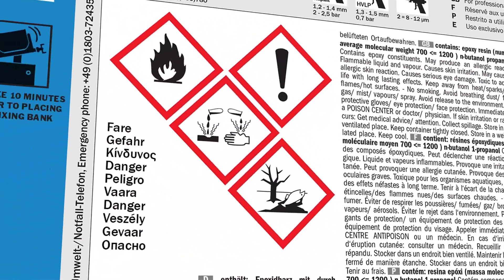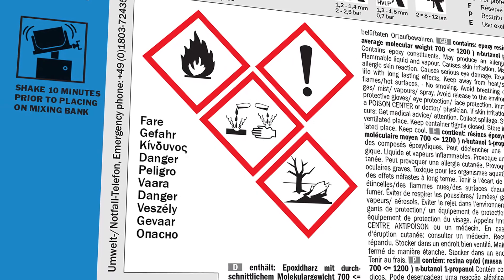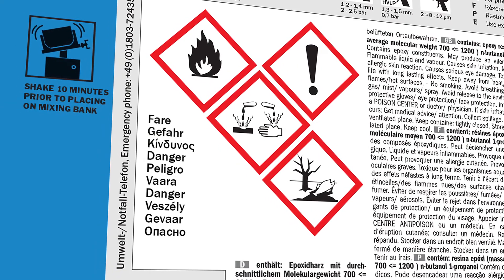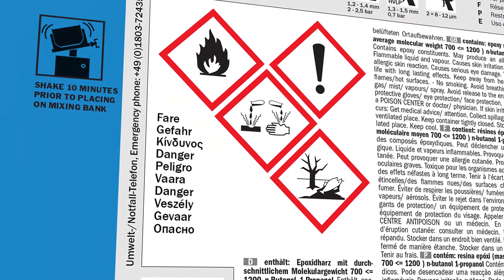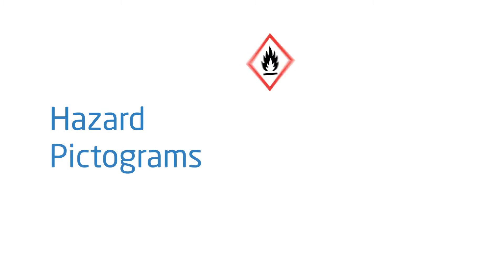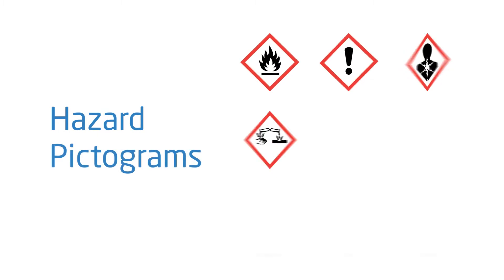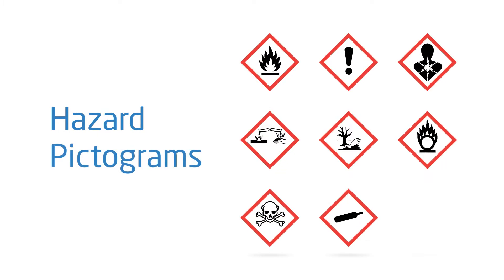Pictograms are incorporated into the CLP label to help visually indicate potential hazards at a glance. A pictogram is square in shape, set at a point, and includes a black hazard symbol on a white background with a red frame.